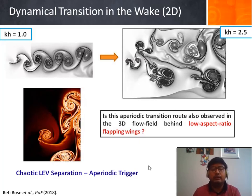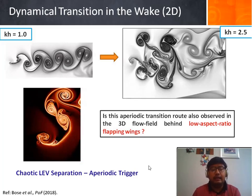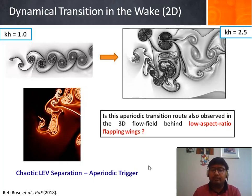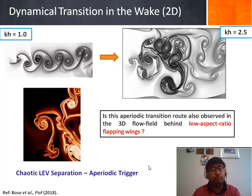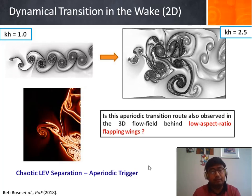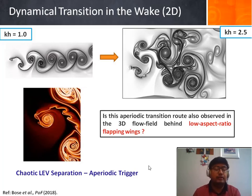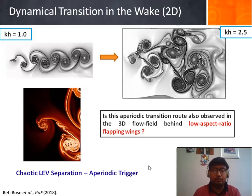Now, the question arises: is this aperiodic transition route also observed in the 3D flow field behind low aspect ratio flapping wings, or is it only observed in two dimensional flow field?